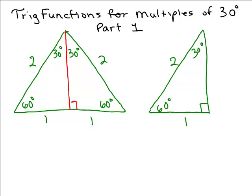So the longest side, which is the hypotenuse, is twice as long as the shortest leg.